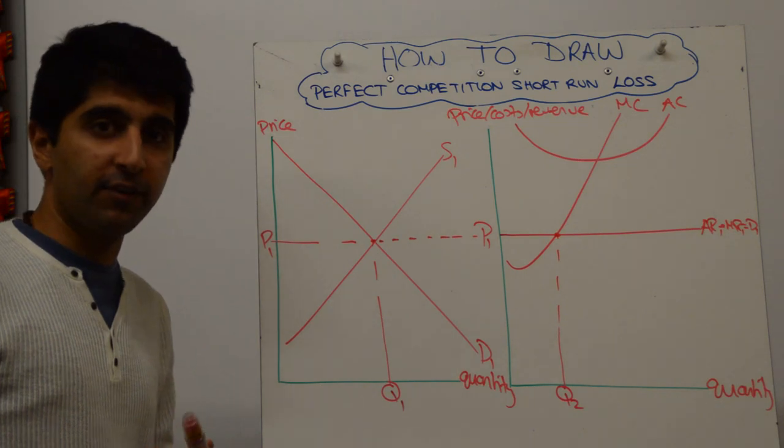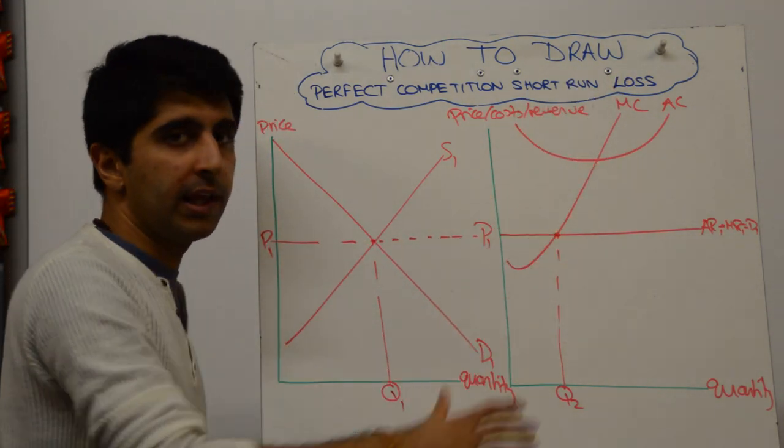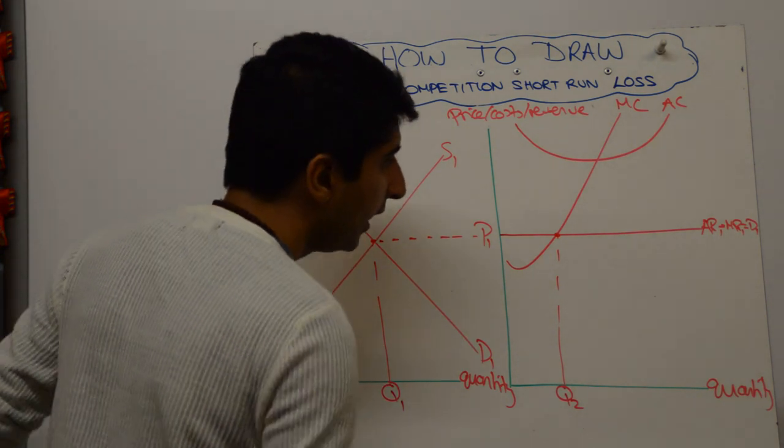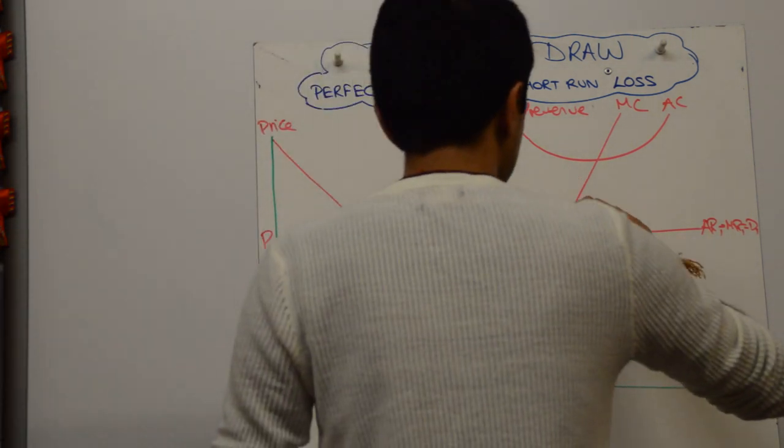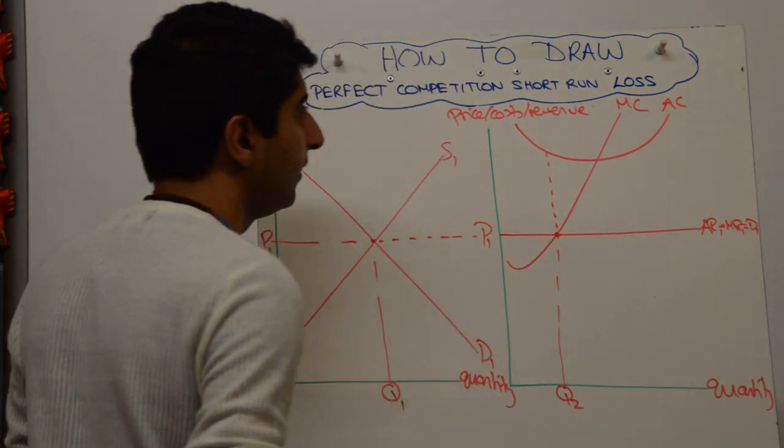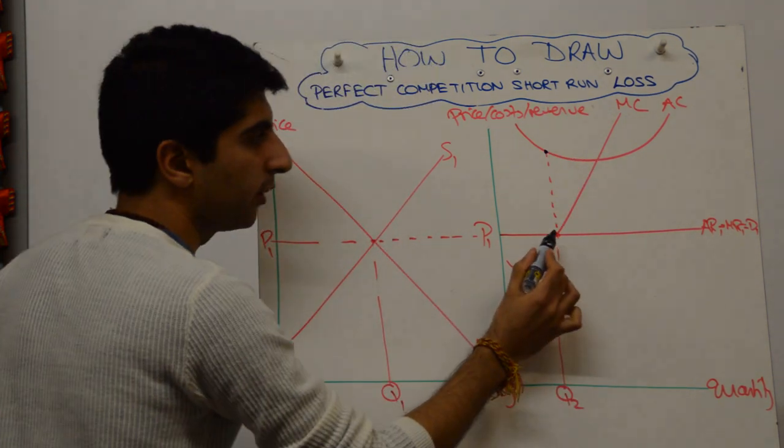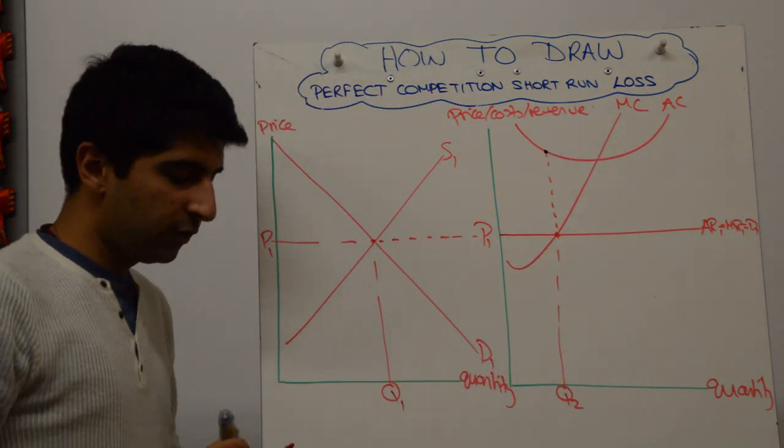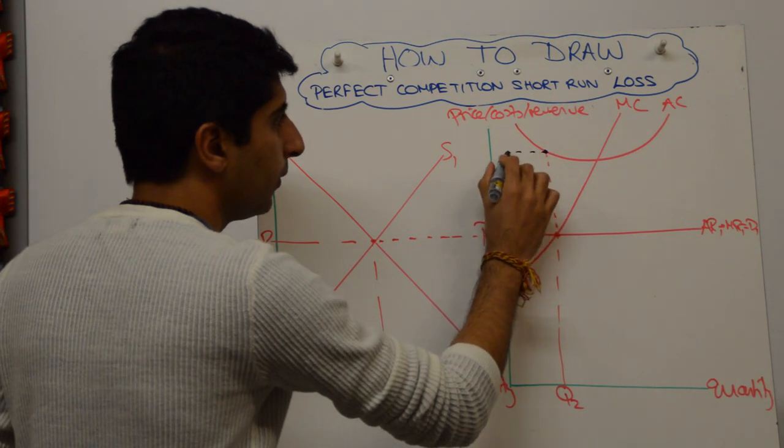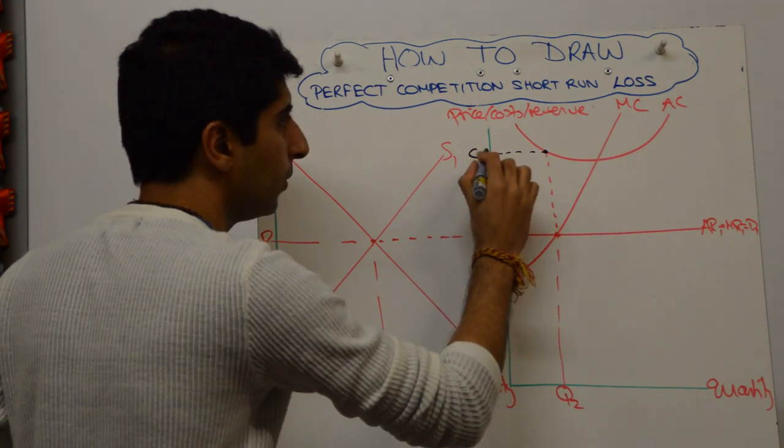Next, we want to work out what profits are being made. But we know we have to show a loss, right? So the way we've drawn it is so that we can show this loss. If we take quantity Q2 up, the black dot is the average cost. And the red dot down here is the average revenue. So costs are higher than revenue. If we take that across, that tells us the cost. C1, C2, C1.